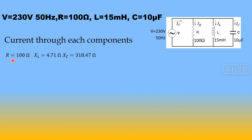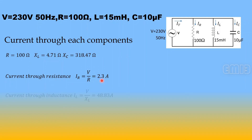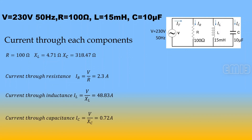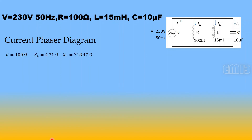The resistance R = 100 Ω, inductive reactance XL = 4.71 Ω, capacitive reactance XC = 318.47 Ω. Current through resistance: IR = V/R = 230/100 = 2.3 A. Current through inductance: IL = V/XL = 230/4.71 = 48.83 A. Current through capacitance: IC = V/XC = 230/318.47 = 0.72 A.